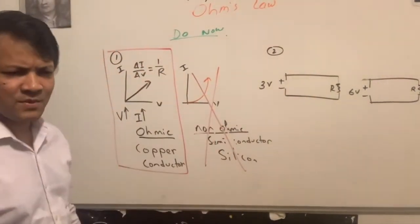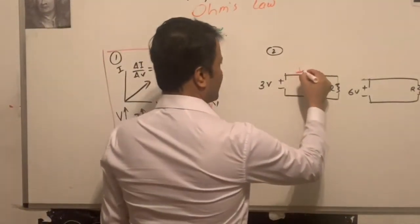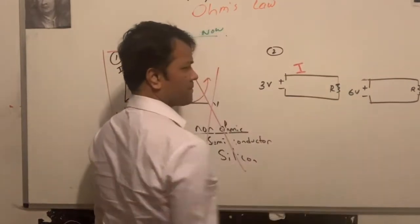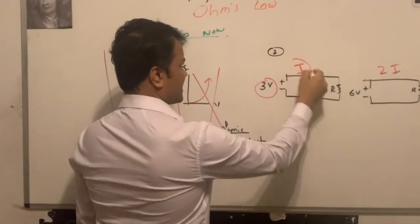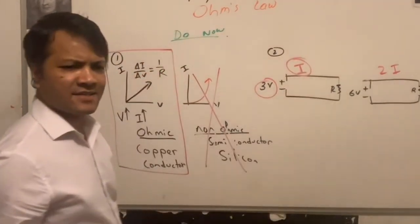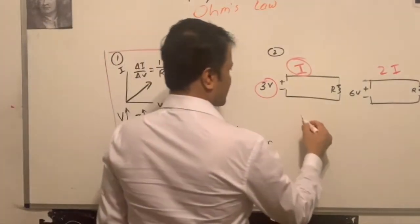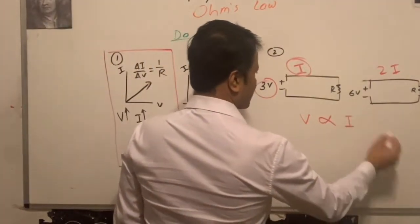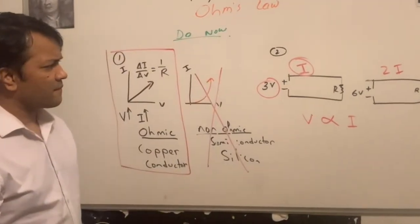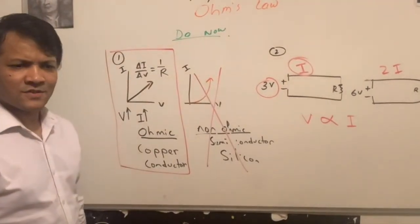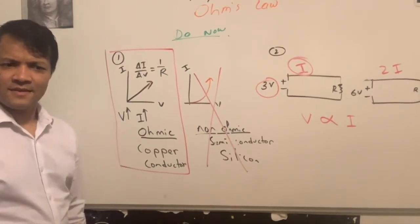What does this tell you in terms of current? If this current is I, what about this one? Two I. So now, voltage and current, then you see a relation. What this relation is? Well, V equals I R.